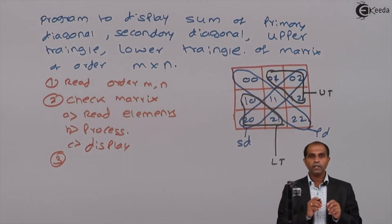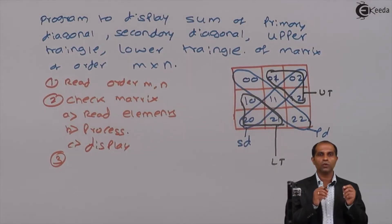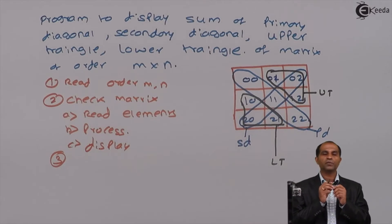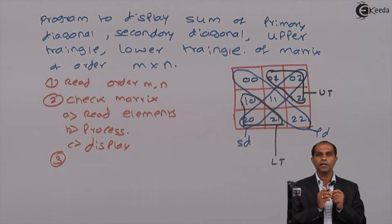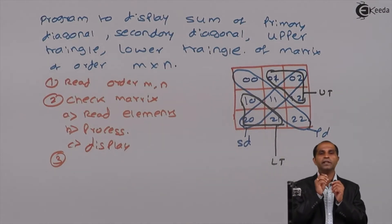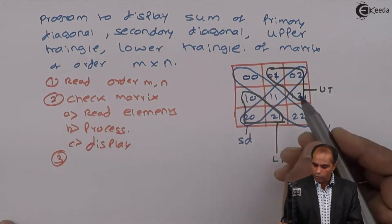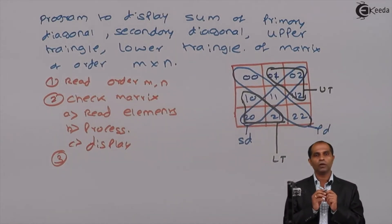We can't identify these diagonals based on the contents of the matrix. If the values are 00, 01, 02, 10, 11, 12 or just numbers like 3, 4, 5, 6, 7, a content-based matrix will never tell you whether an element is on the primary diagonal, secondary diagonal, or upper triangle. You must always write an index matrix, as I have written here. The index matrix will tell you whether the element belongs to the primary diagonal, secondary diagonal, upper triangle, or lower triangle.